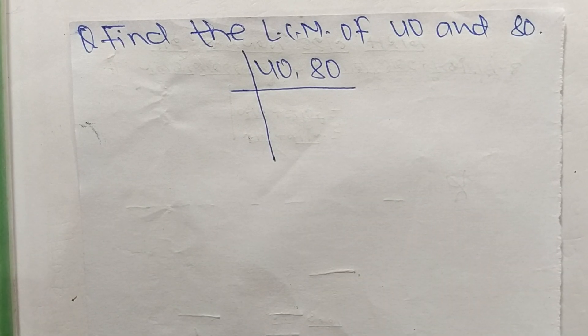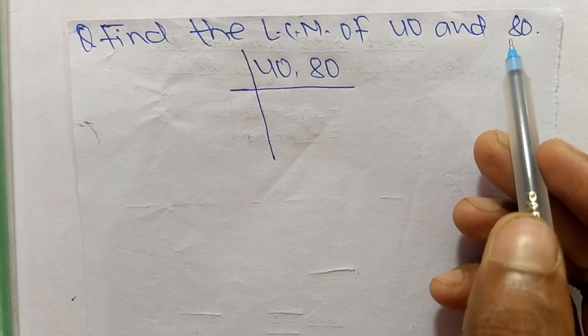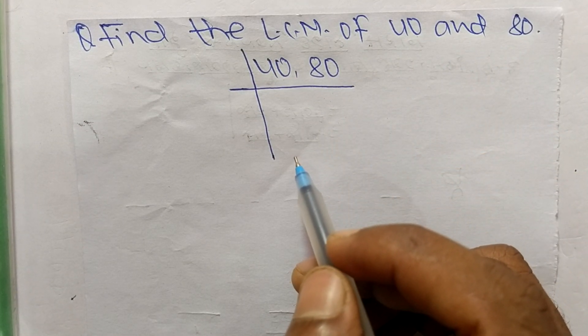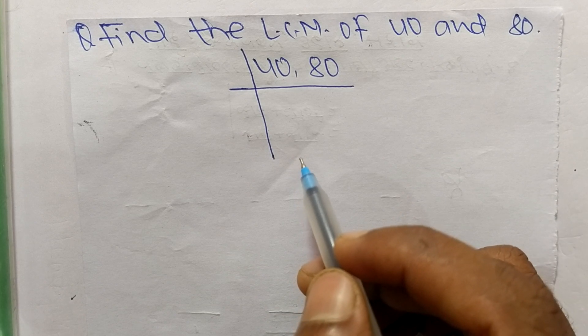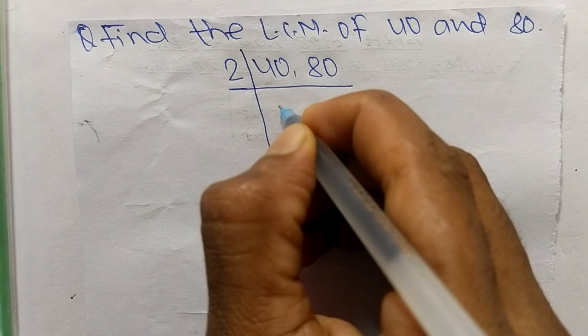Today in this video we shall learn to find the LCM of 40 and 80. First of all we choose the lowest number that can exactly divide 40 and 80. The number is 2. So 2 times 20 mean 40, 2 times 40 mean 80.